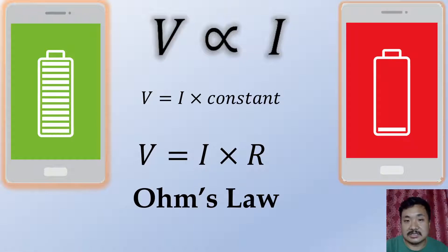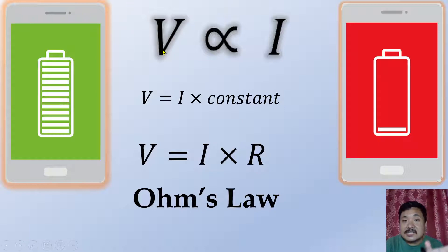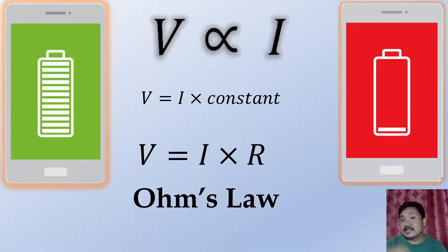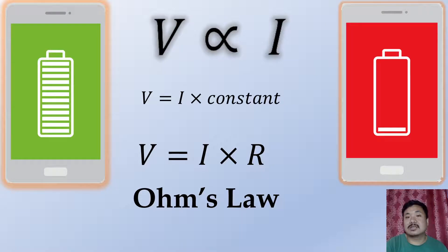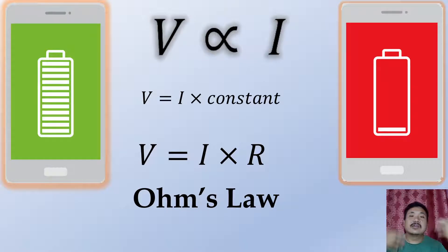Ohm's law states that the potential difference between two points in a conductor is directly proportional to the current flowing through it. This means: more voltage, more current; less voltage, less current.